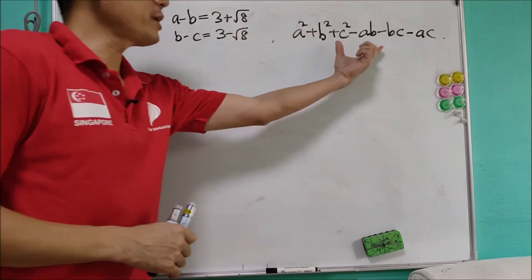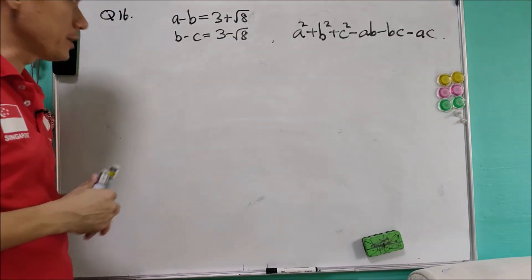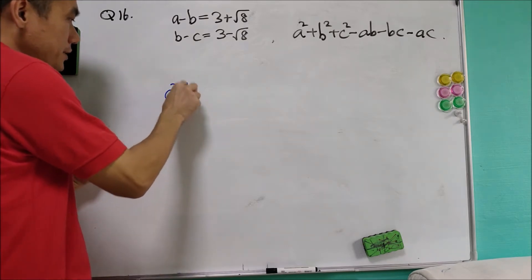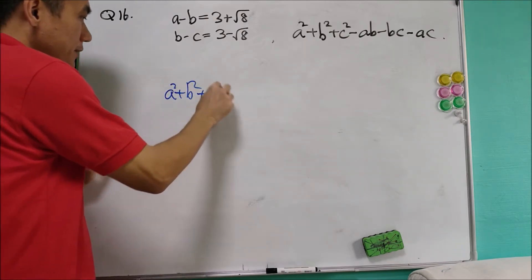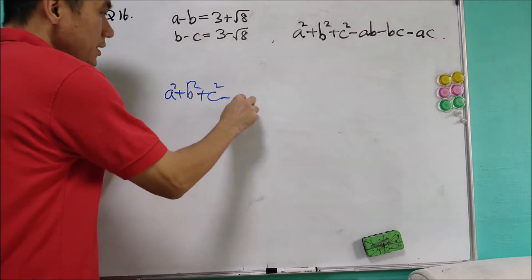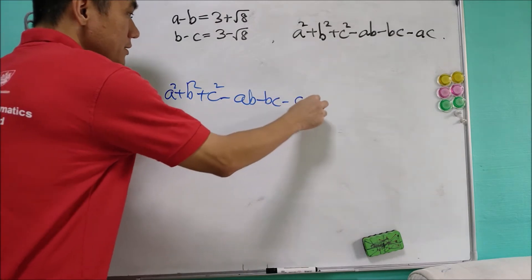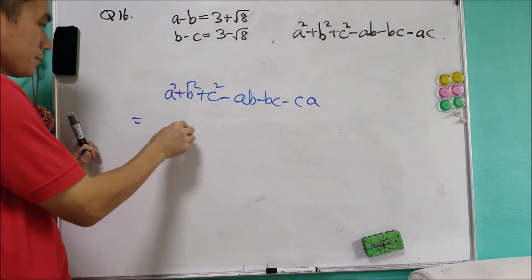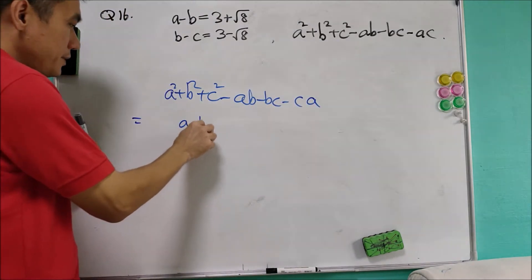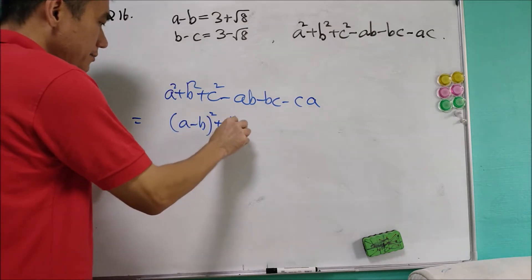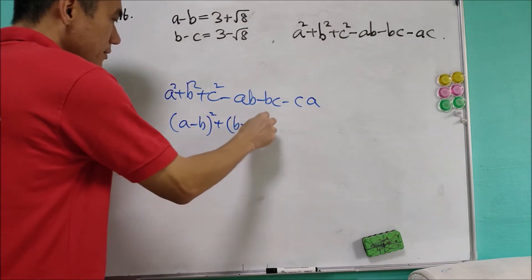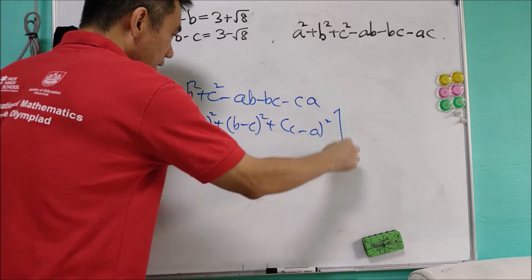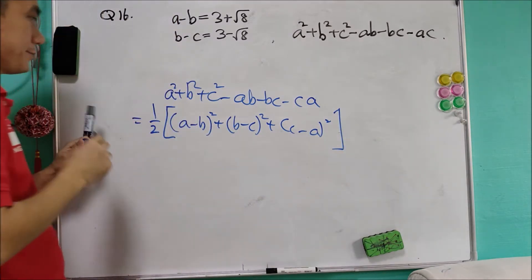This is quite a common expression found in math olympiad. We recognize that a squared plus b squared plus c squared minus ab minus bc minus ca is equal to half of (a minus b) squared plus (b minus c) squared plus (c minus a) squared.